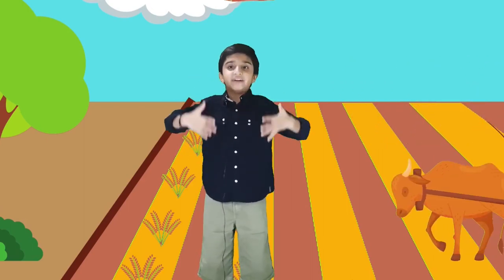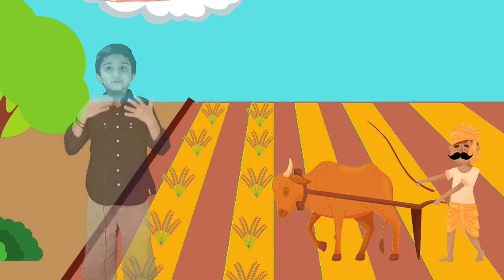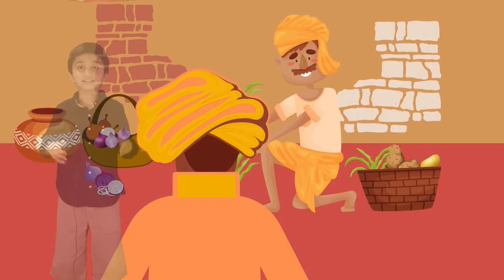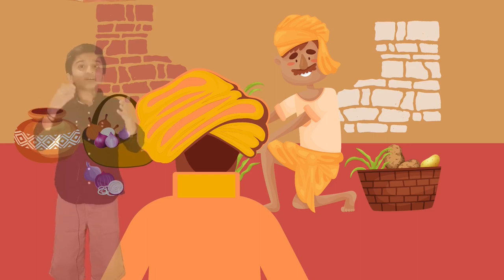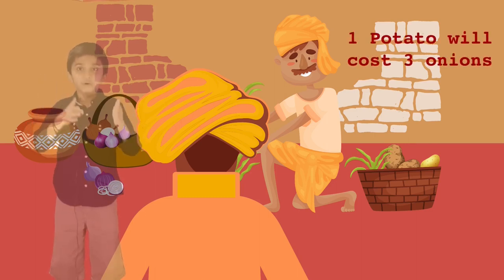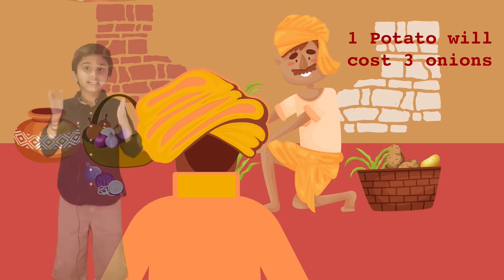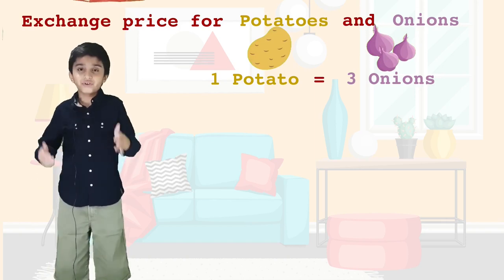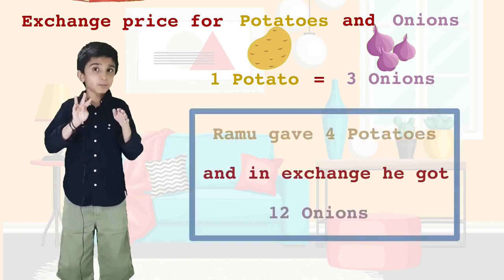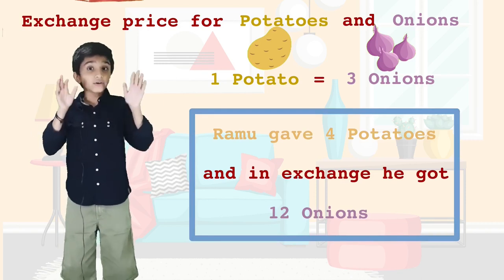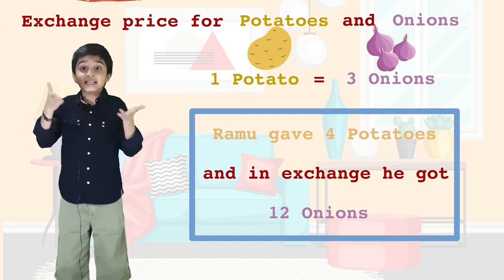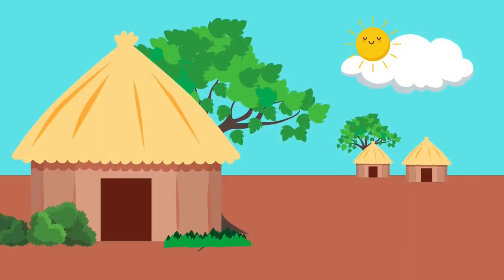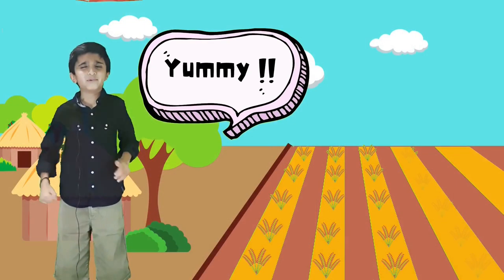He knew Deepu used to grow onions, so one day he went with some potatoes to Deepu's place to exchange for onions. They discussed and established that growing potatoes needs more effort, and one potato would cost three onions. Ramu gave four potatoes and got twelve onions — because four times three is twelve. For a few days, Ramu and Deepu had mashed potatoes with onions and they both loved it.